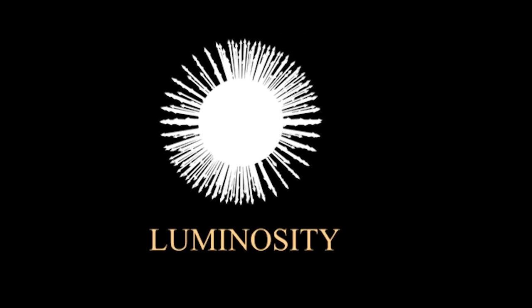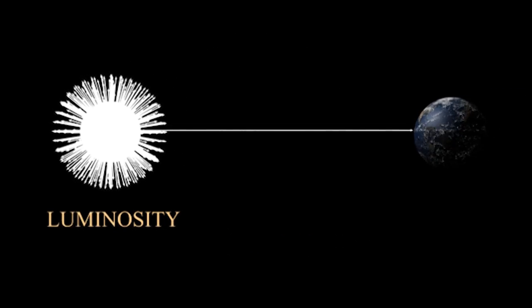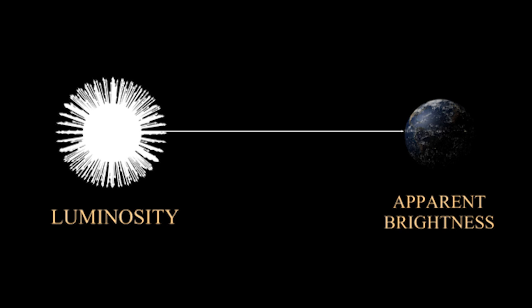The amount of light that a star gives off is called its luminosity. The amount of light that reaches the Earth gives us the apparent brightness. From the apparent brightness and the distance to the star, we can compute the luminosity.